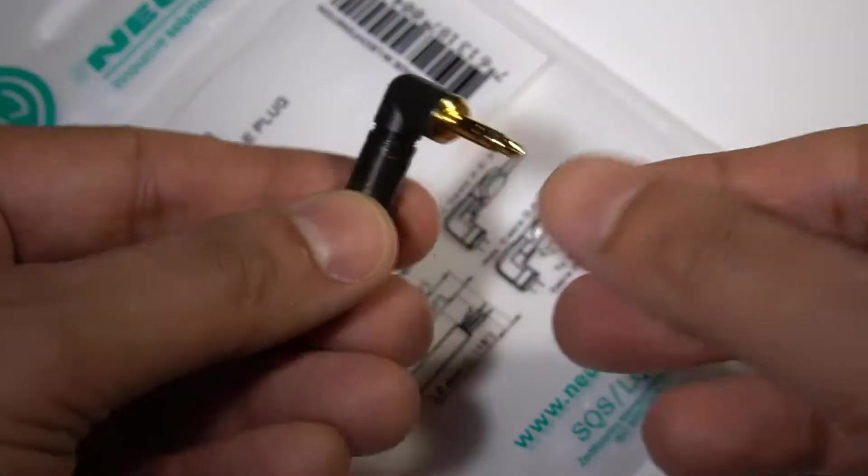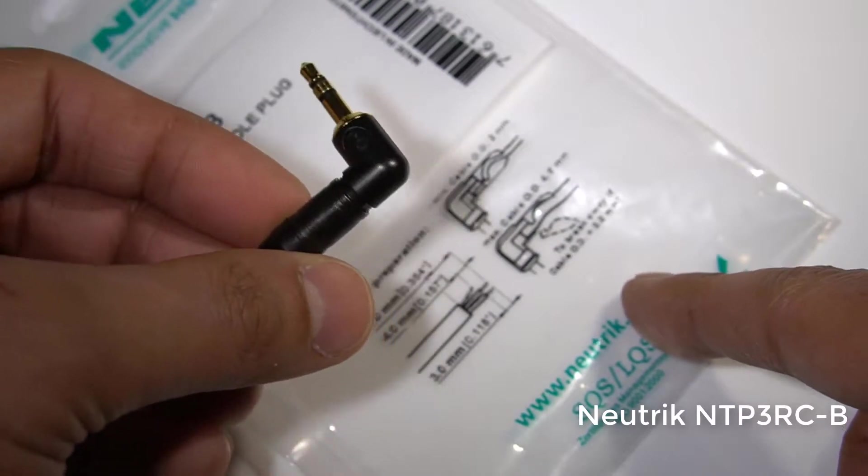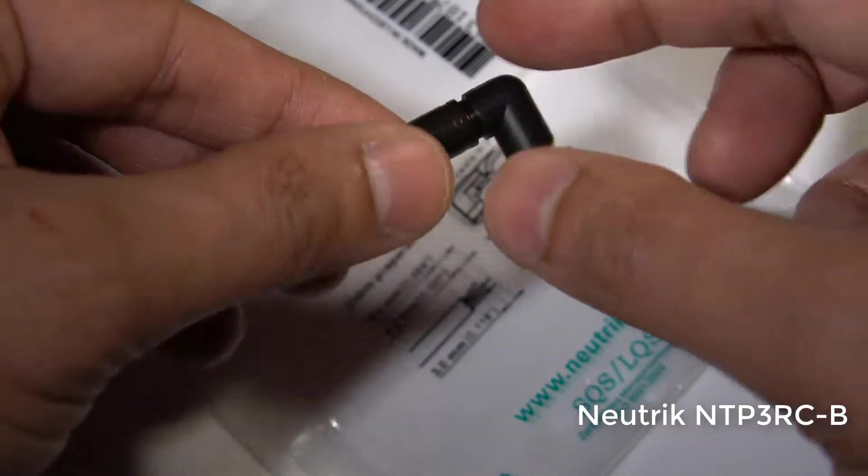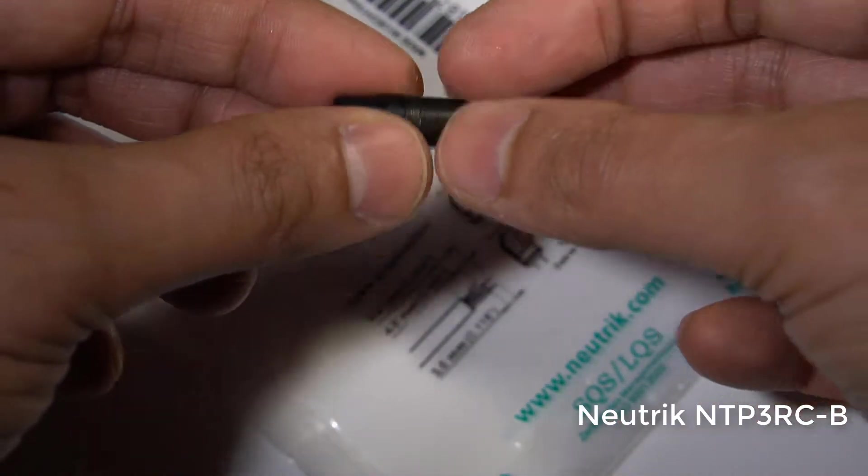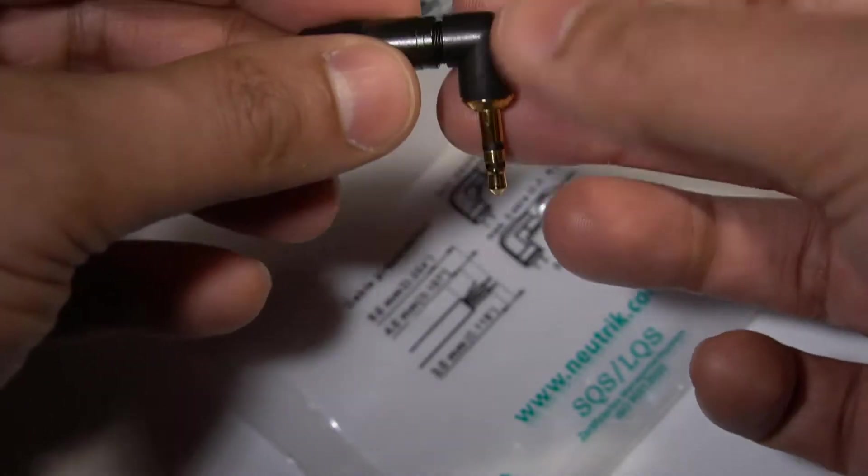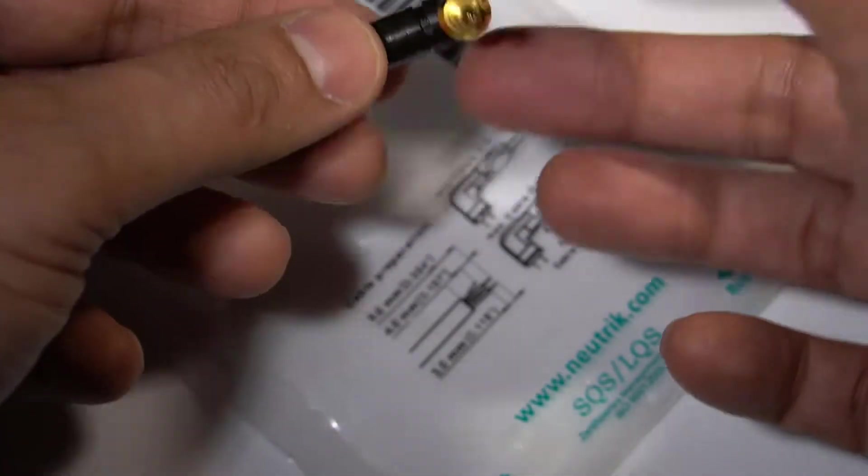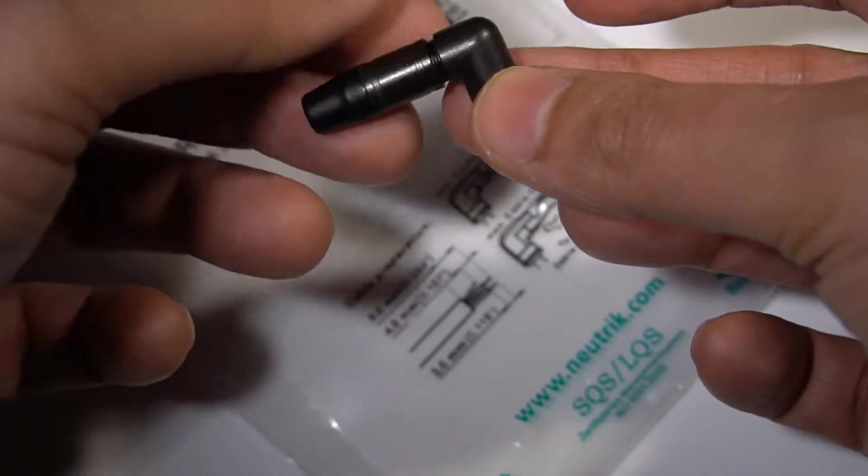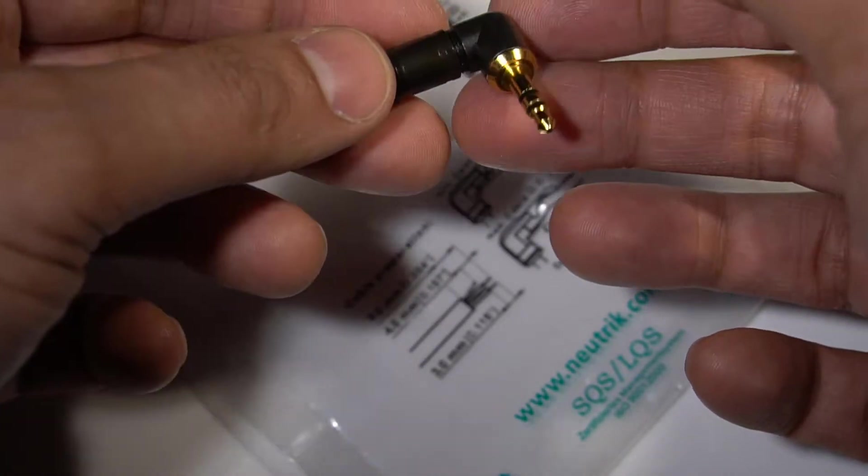This 3.5mm stereo jack plug is a Neutrik part, and it's got an all metal nickel shell and gold plating, but it also comes in an unplated and plain nickel colored shell as well.